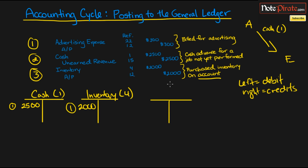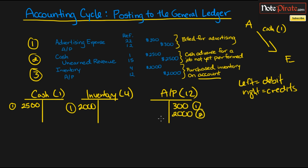Next is number twelve, which is accounts payable. For this one we actually have two entries. The first accounts payable entry will be $300, and the second will be $2,000. We list that and put a number two because it is the second entry. You always have to post these in sequential order.